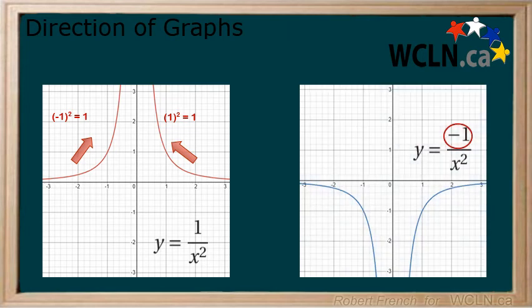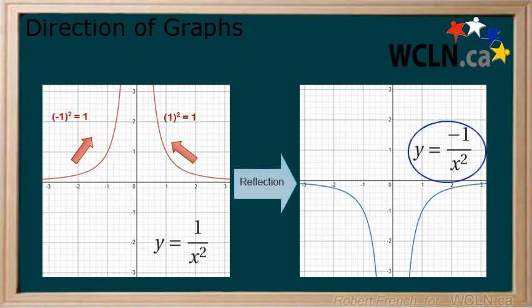If the largest power in the numerator is negative, or the only value if there is no power, then this is a reflection and the graph is reflected in the x-axis. Here is the previous rational function reflected in the x-axis, done by simply adding a negative to the numerator.